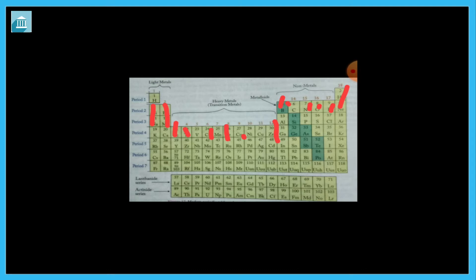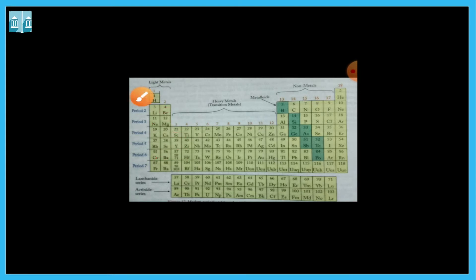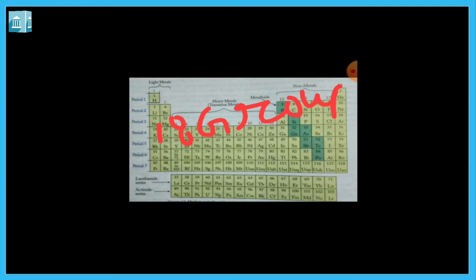In the Modern Periodic Table, there are 18 groups and 7 periods. So remember: 18 groups and 7 periods.